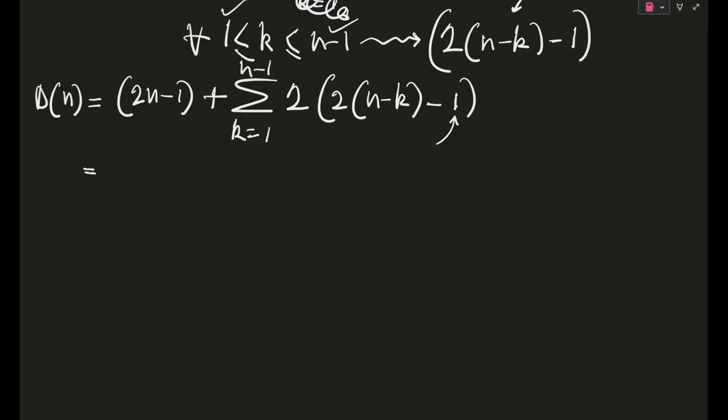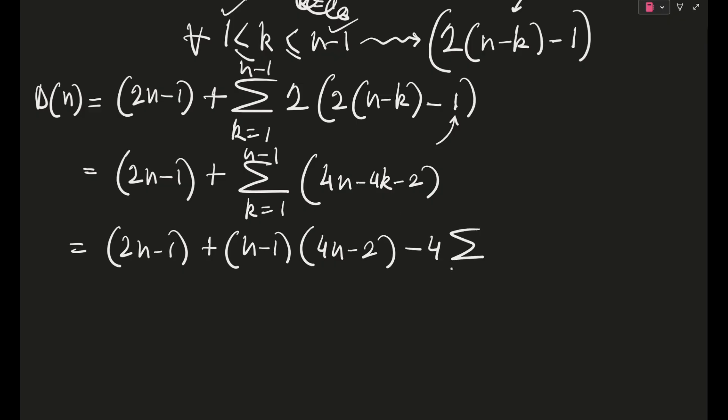So this will be the final expression for D(n). If we evaluate this, sum this up: (2n-1) + Σ(k=1 to n-1)[4n-4k-2]. This will be 2n-1, and this will become (n-1)(4n-2) because this sigma depends on k, so we take the 4n-2 outside explicitly, and this thing will be minus 4 times Σ(k=1 to n-1)k. If you actually evaluate this complete thing, then your D(n) - I am jumping a few steps, just evaluate this - this will come out to be 2n² - 2n + 1.